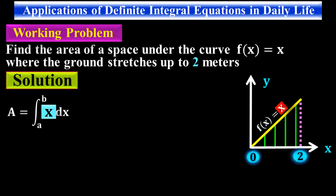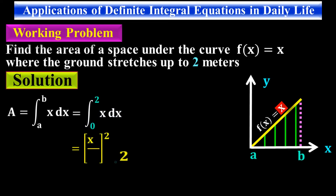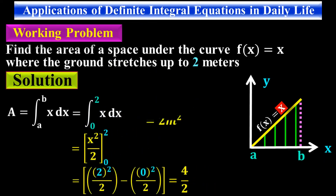Suppose a = 0 and b = 2. Substituting these values, the integral of x from 0 to 2 gives x²/2 evaluated at the limits, which equals 2 meters squared. So there is a total area of 2 meters squared under that yellow curve. This is one of the basic examples of calculating the area under a curve — you can search for many more problems in daily life.